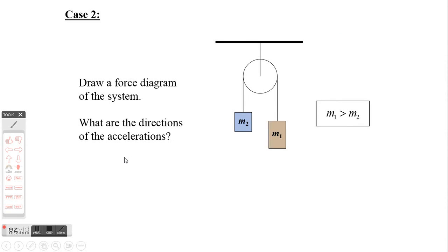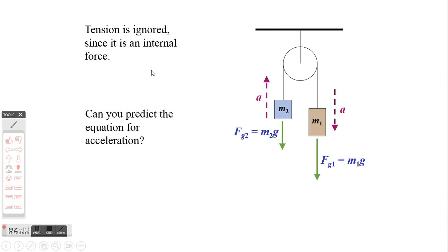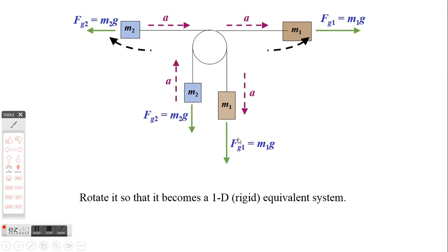We can also have this kind of pulley — an Atwood machine — where m1 is greater than m2, which means m1 goes down and m2 goes up. We ignore tension again because it's an internal force when looking at the whole system. In this case Fg1 pulls down, Fg2 resists that motion — so the system moves with m1 going down and m2 going up. We can rotate this so it becomes equivalent to a 1D system.